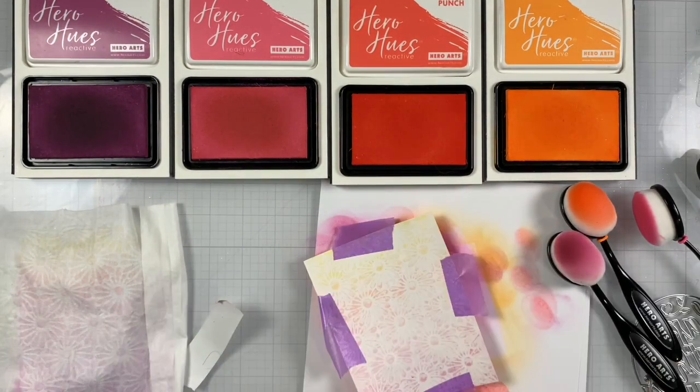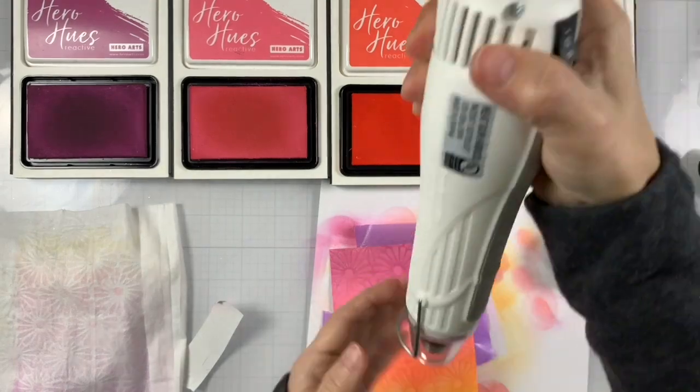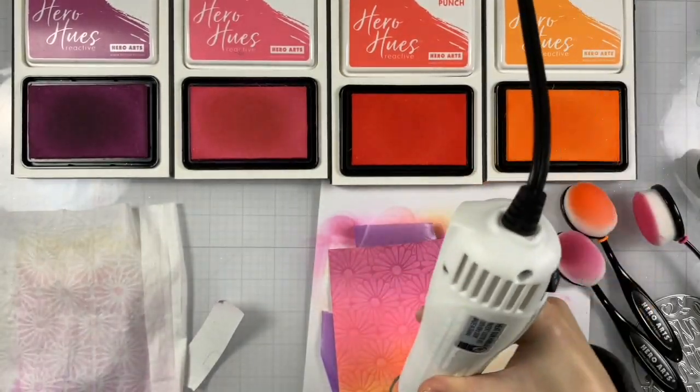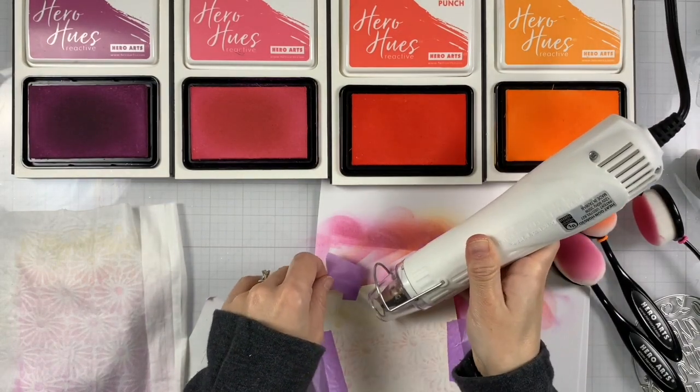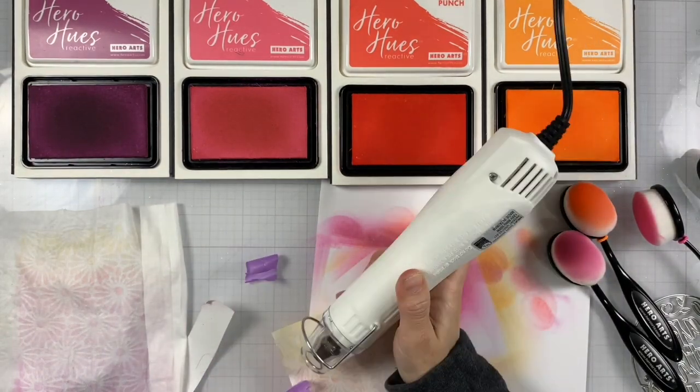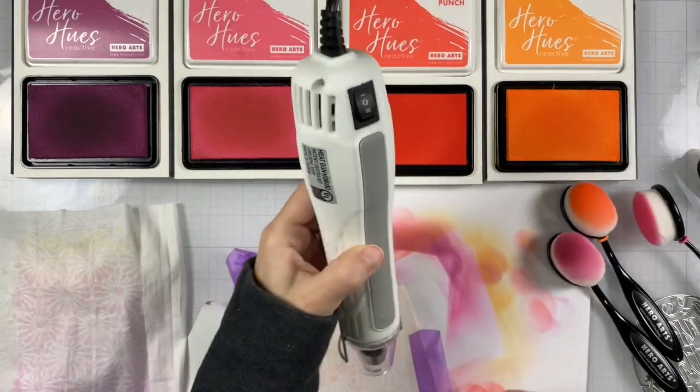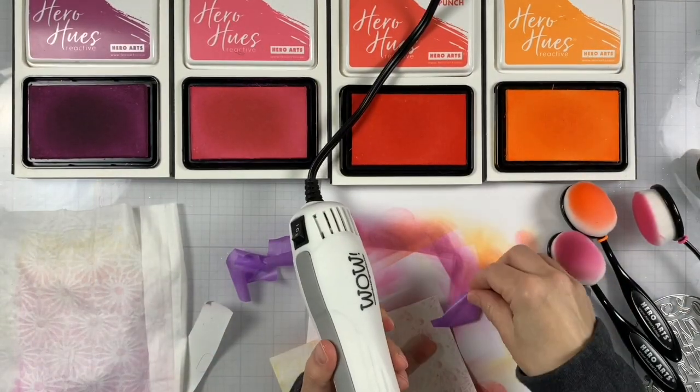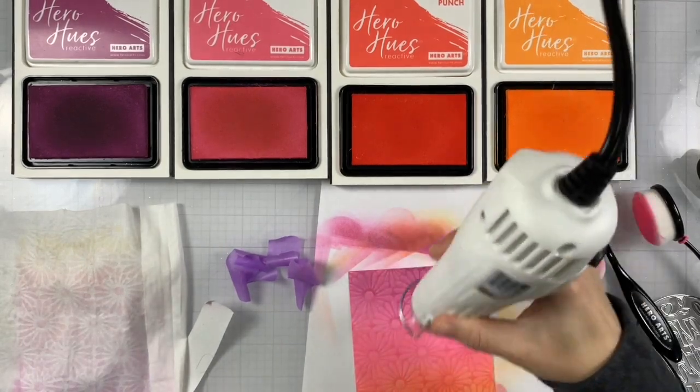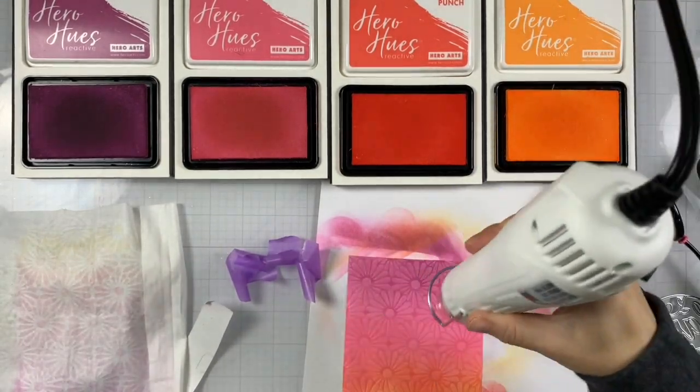So you can see that baby wipe on the left has some ink on it. Because we used reactive ink, we're getting more textured look. So where the baby wipe touched that background, we're going to have a lighter color. It's not like white white, but it just gives nice contrast. Very subtle contrast.